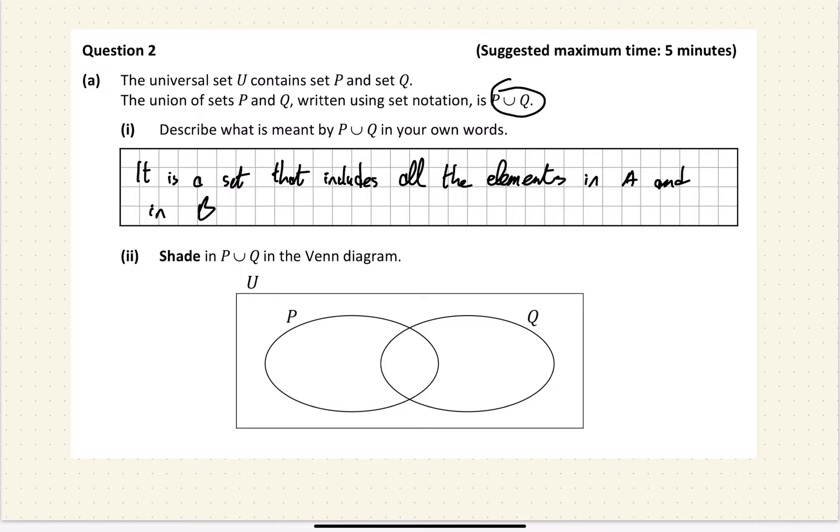Okay, shade in P union Q in the Venn diagram. So I'll use green highlighter for this. P union Q is going to be P union Q. All right, so there it is shaded in. That's P union Q.